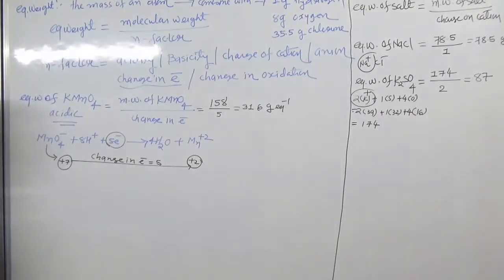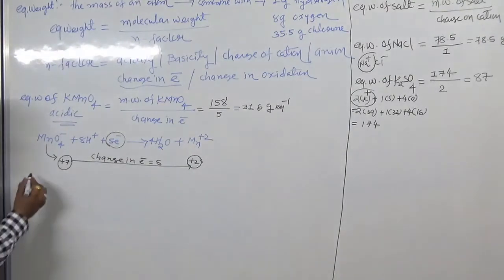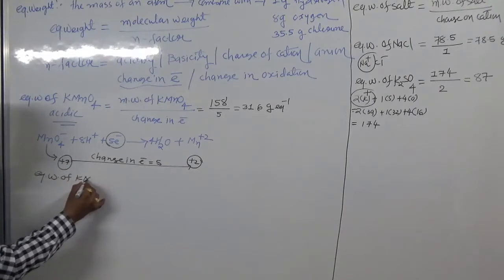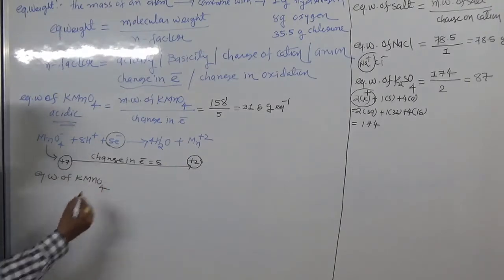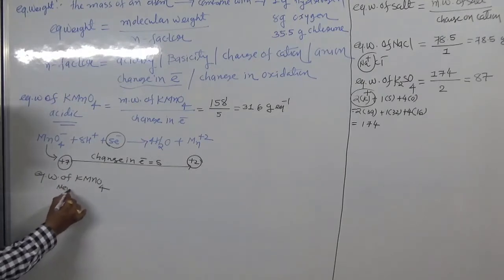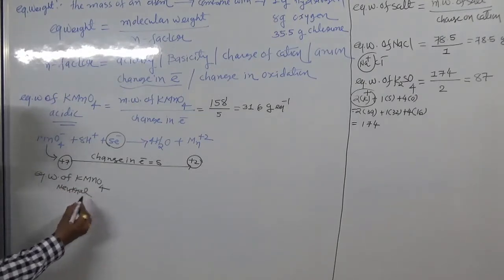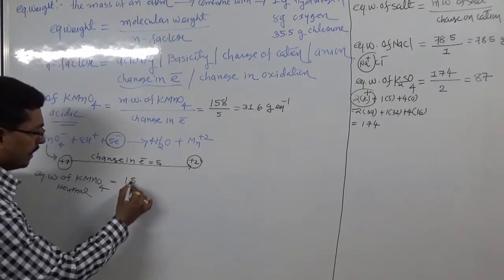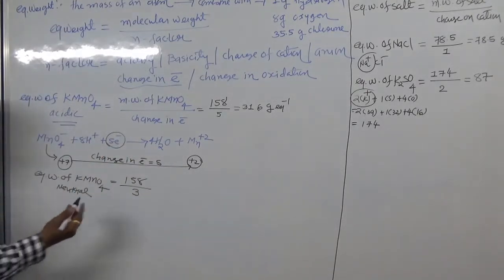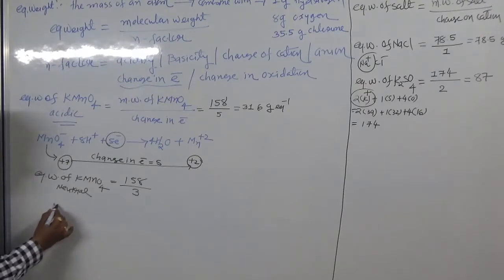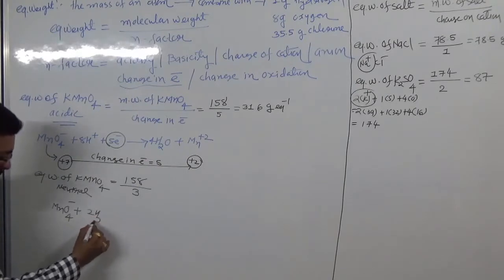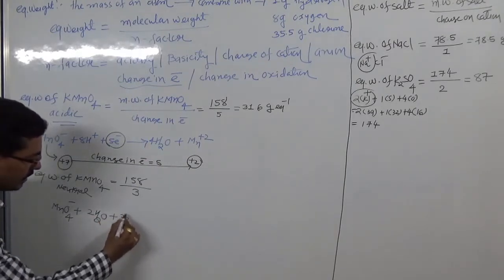Now suppose we want to find equivalent weight of KMnO₄ in neutral medium. The same formula applies, but in neutral medium the change in electron is 3. So we calculate 158 divided by 3.